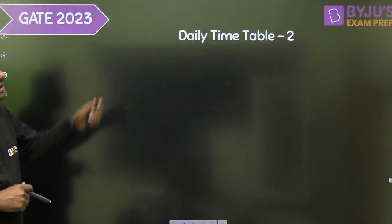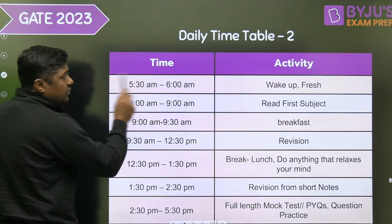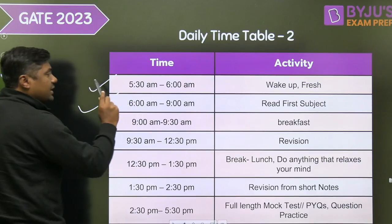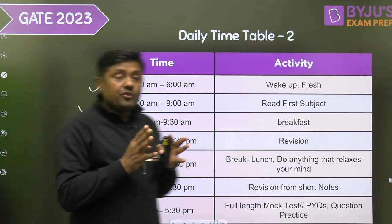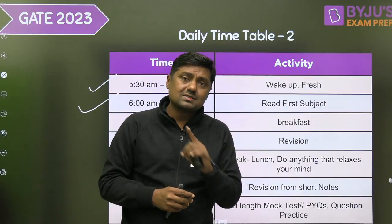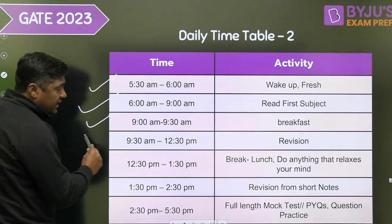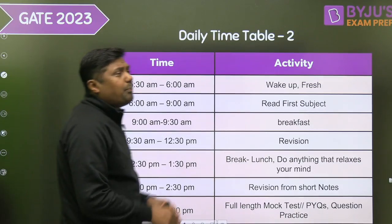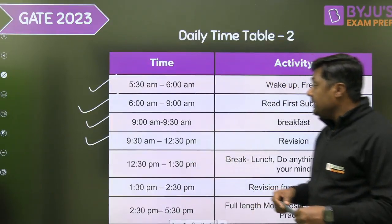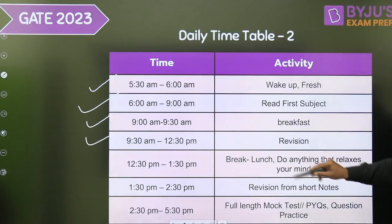Here is the timetable for the afternoon session. Wake up time is 5:30 to 6 AM. From 6 to 9 AM, read your first subject — for weak areas and new topics, choose your first subject accordingly. From 9 to 9:30 AM is breakfast time. From 9:30 AM to 12:30 PM, do a complete revision from your short notes and formula notes.